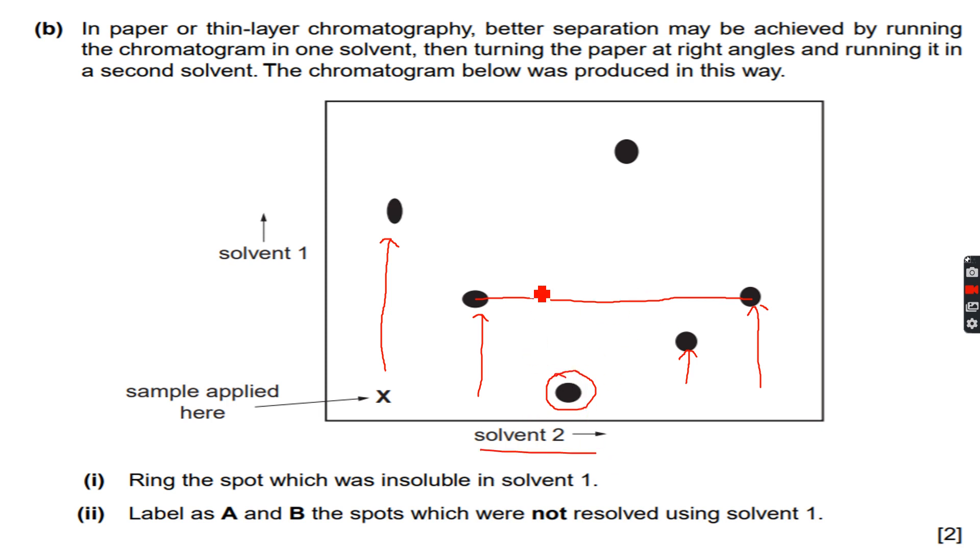When we had not used solvent 2, this spot, which I can label A, was somewhere over here. A was somewhere over here initially. So this spot was somewhere over here, and then when we used solvent 2, A was moved till here.